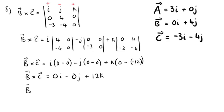So B cross C equals positive 12k. There we have it. I hope it makes sense.